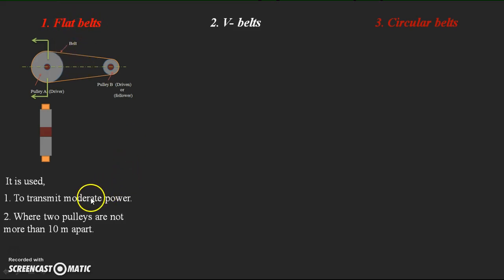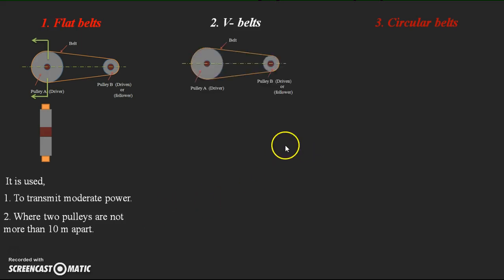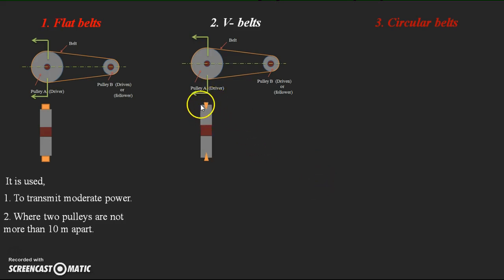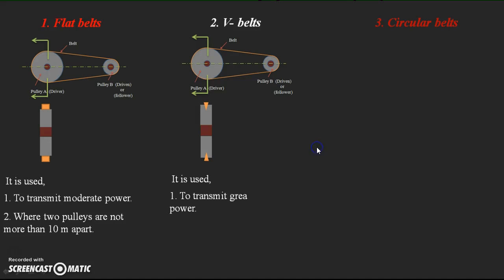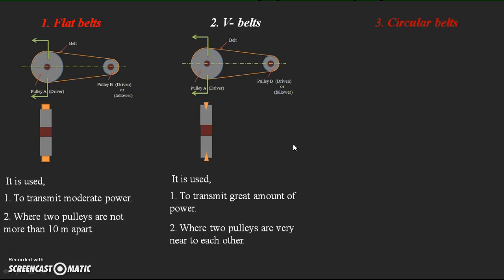For V belts, the cross-section is shaped like a V, and a matching V groove is made in the pulley. The V belt is assembled into this V groove. V belts are used for high power transmission, and they are used when the two pulleys are very near to each other — that is, when the two shafts are closer together and we need to transmit a high amount of power.